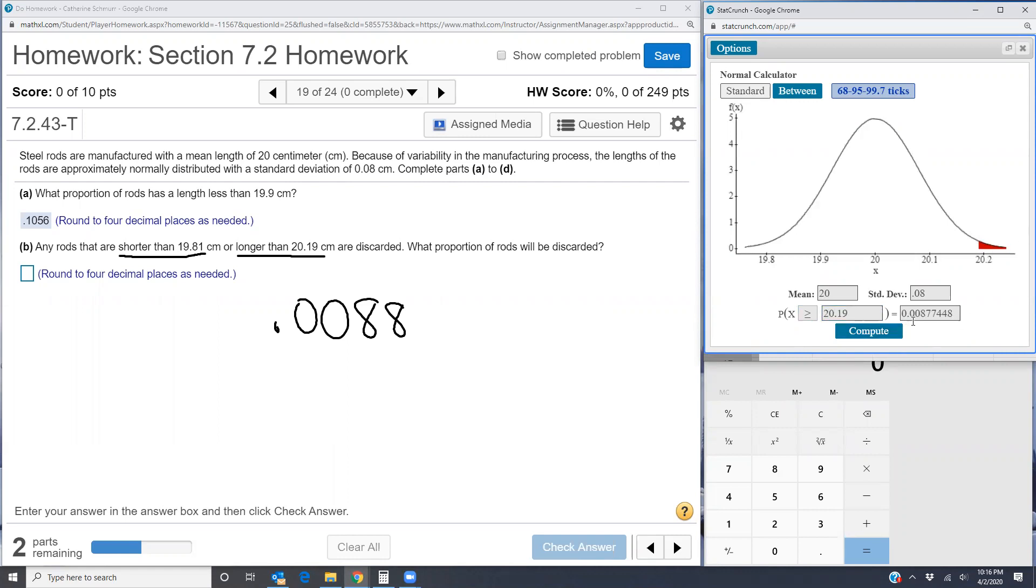And again, I get 0.0088. But notice that's over on the right side of the curve now because it's a longer than. So I'm going to write that one down as well. I have 0.0088 is my proportion that's longer than 20.19 centimeters.